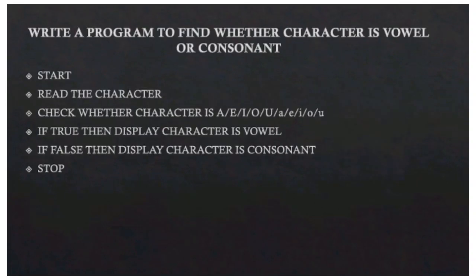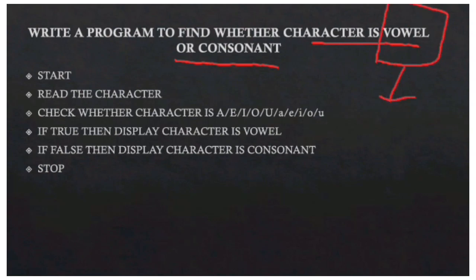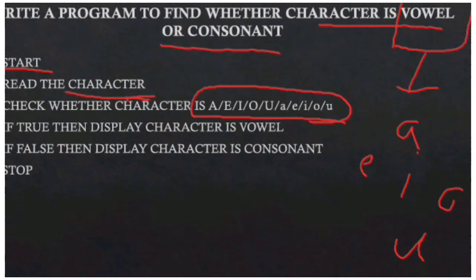Now we look at a program to find whether a character is a vowel or a consonant. There are five vowels: a, e, i, o, and u. The algorithm is: first we start, then we read the character. If the character matches a, e, i, o, or u, then we display it is a vowel, else we print it is a consonant, and then stop.